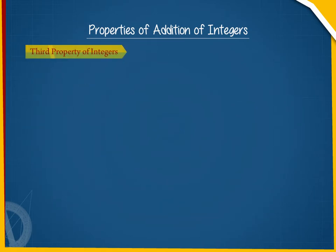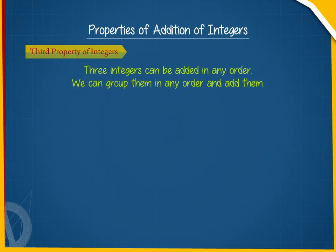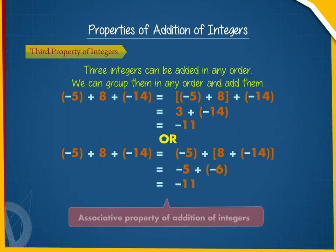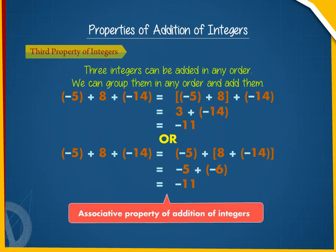The third property says that three integers can be added in any order. We can group them in any order and add them. Let us find the sum of these integers: minus 5 plus 8 plus minus 14 is equal to minus 11. This is known as the associative property of addition of integers.